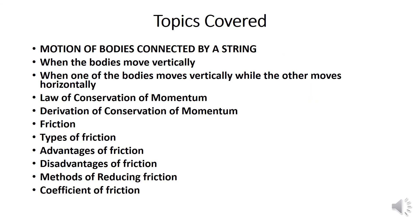So, in this chapter we covered the following topics. We discussed about motion of bodies connected by a string moving vertically, and the other case was when one body is moving vertically, the other horizontally. We also discussed about the law of conservation of momentum. We did the derivation of conservation of momentum. Friction, types of friction, advantages and disadvantages of friction. We also discussed the methods of reducing friction and coefficient of friction as well.